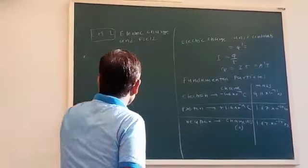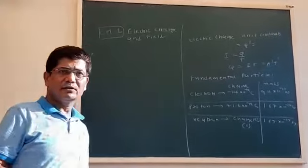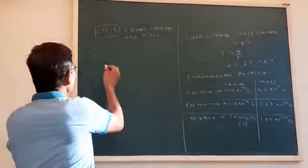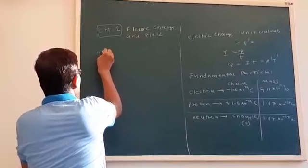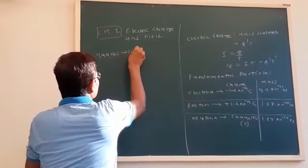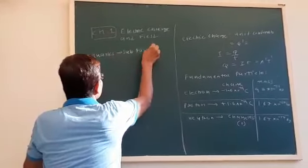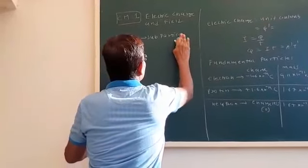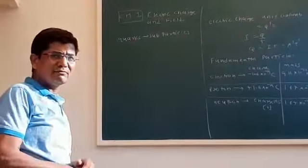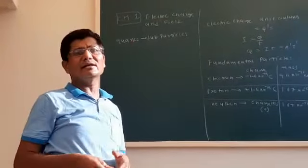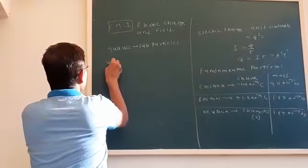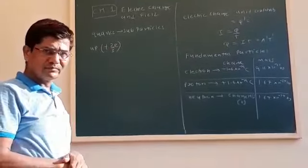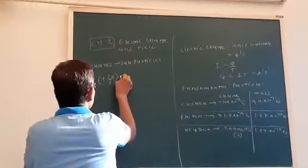Next we have to see about sub-particles. So far, the electron was the smallest particle, but nowadays modern physics says there is a particle called quarks. Quarks are sub-particles. There is an up-quark which has a charge of plus 2/3 E. Since 2/3 is smaller than 1, it is also called a sub-particle. The symbol is U.